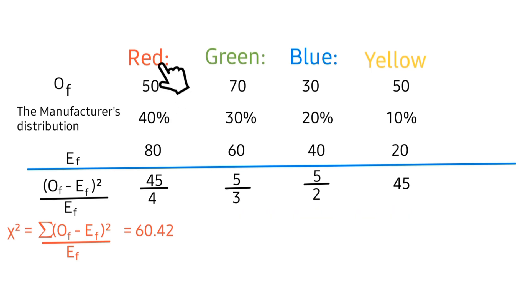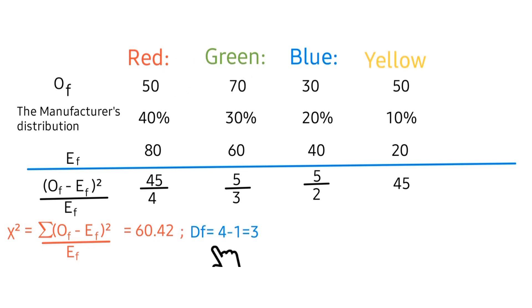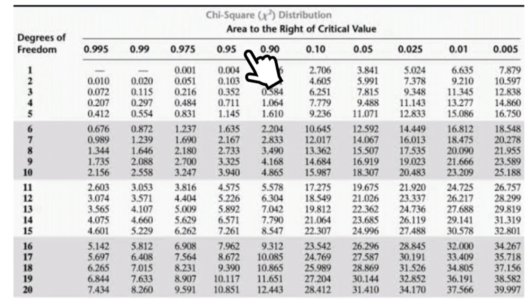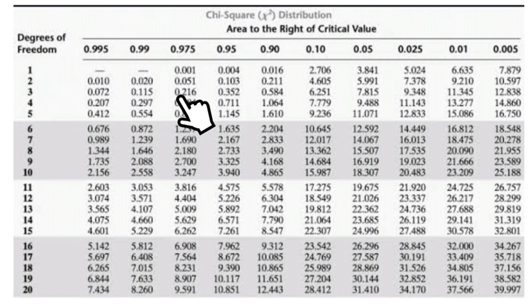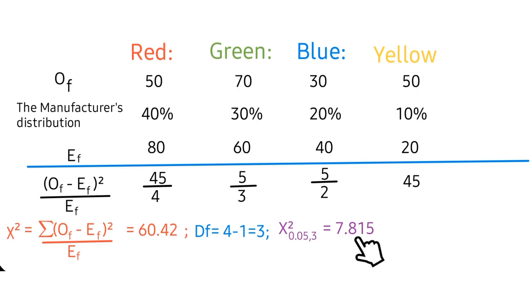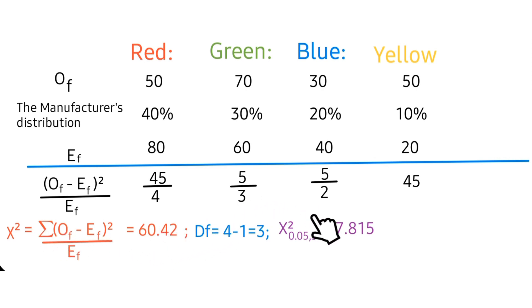Next is to determine the degrees of freedom. We have four levels — red, green, blue, and yellow — so the degrees of freedom is 4 minus 1, which equals 3. Next, we find the critical value at a significance level of 0.05 with 3 degrees of freedom, which is 7.815.